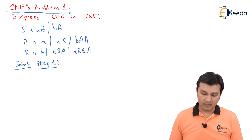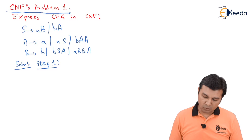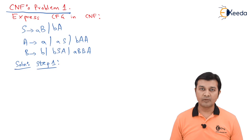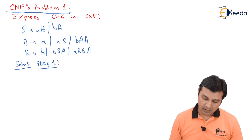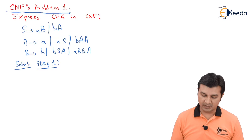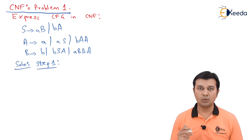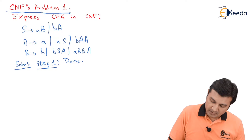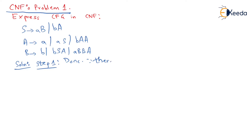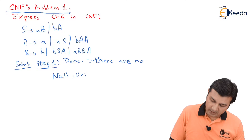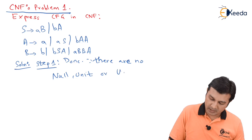Looking at unit productions, I observe there are no unit productions in this problem. Lastly, looking for useless productions, each variable A and B can derive a sentence and both are reachable from the start state. Therefore, there are no useless productions. Step one is done.